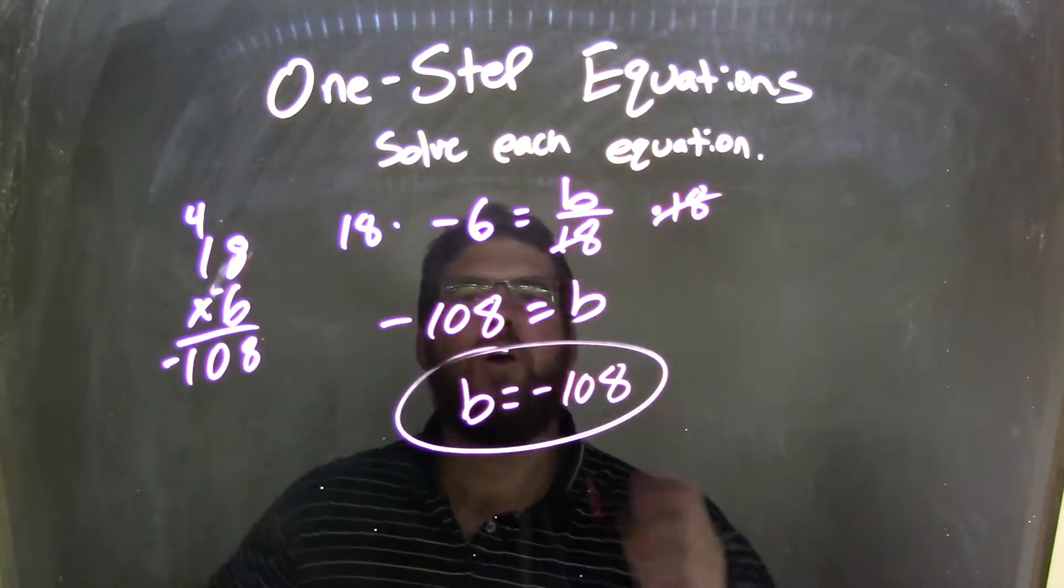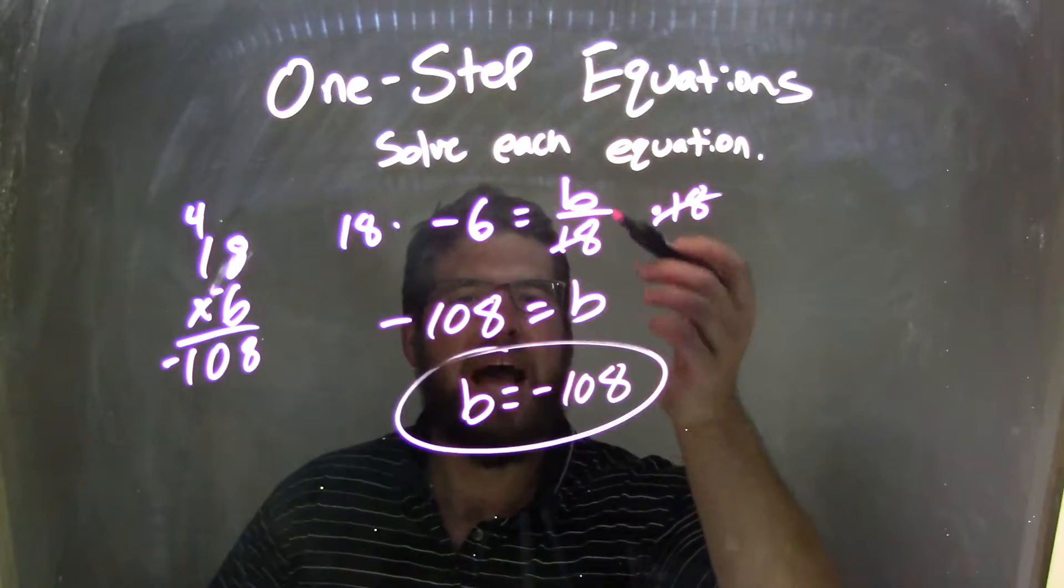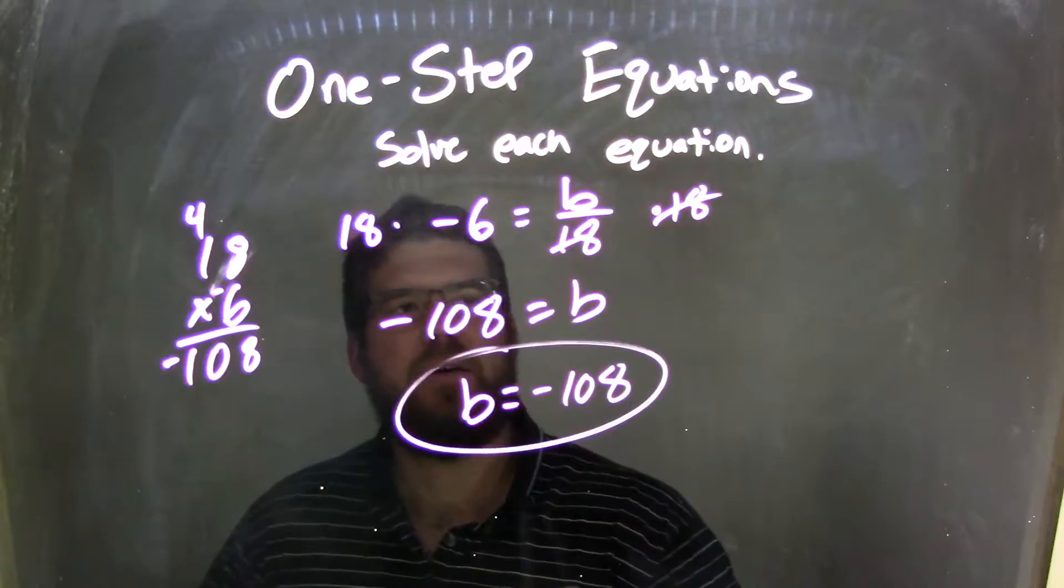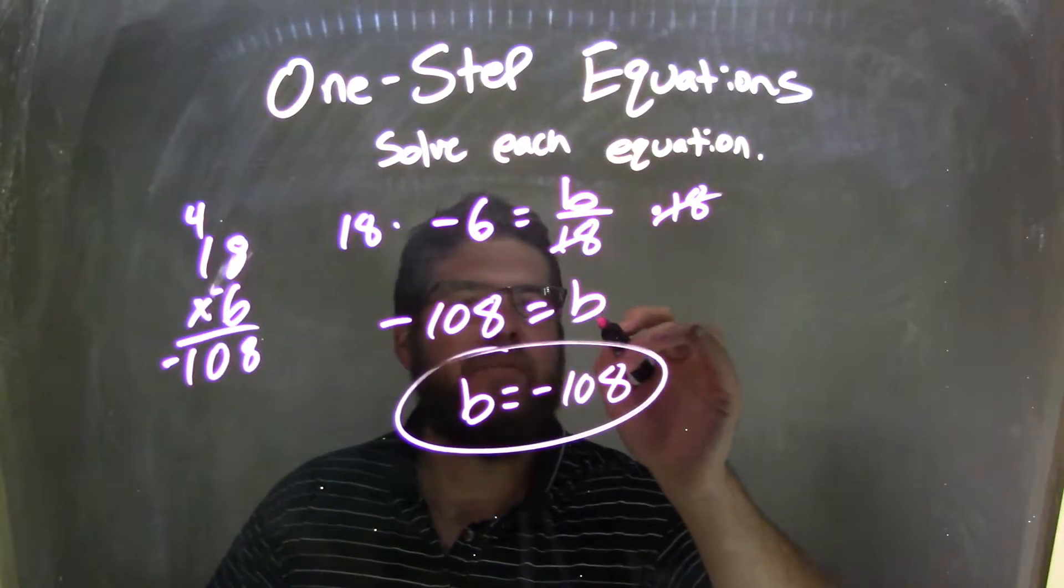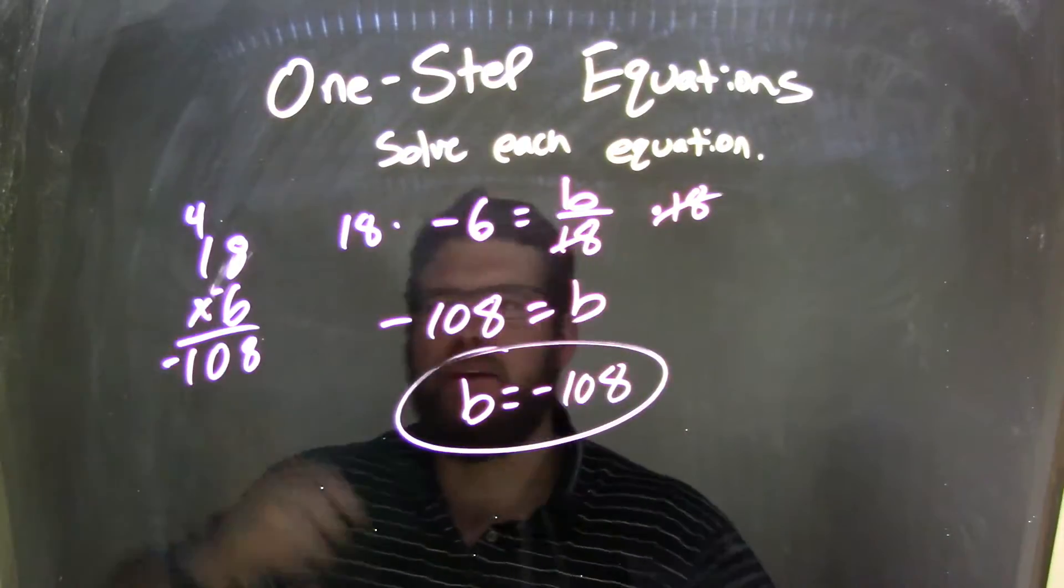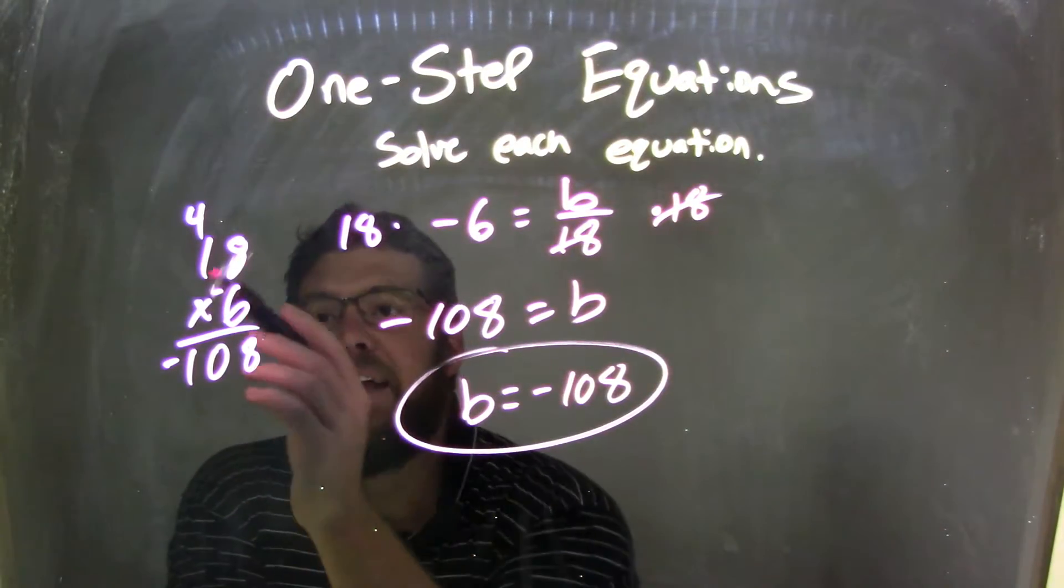So let's recap. We have negative 6 equals b divided by 18. Opposite of division is multiplication, so multiply by the 18 to both sides. I cancel the 18 on the right, and I'm left with just b. But now I have 18 times negative 6, so I wrote it here. So I have to do negative 6, 18 times negative 6.